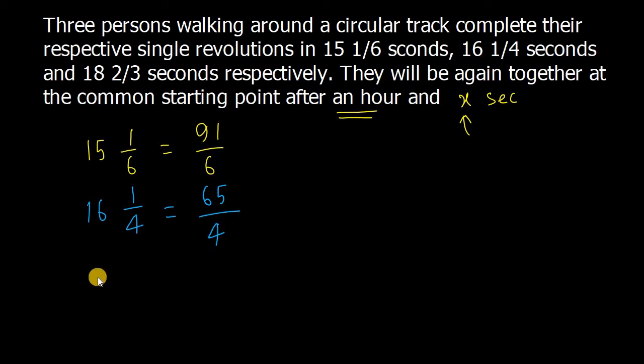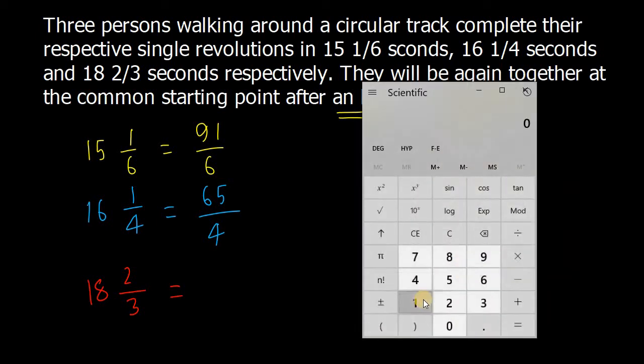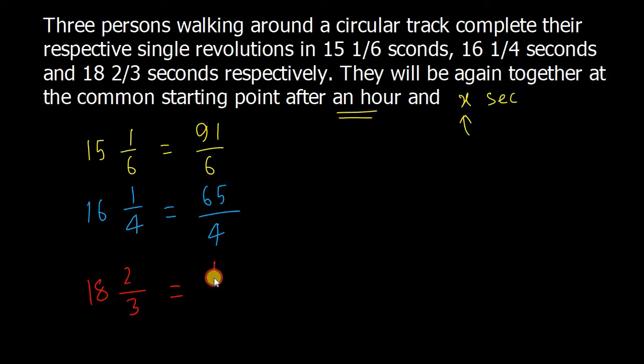The track is 18 and 2 by 3. 18 into 3 is 54, 54 plus 2 is 56, so 56 by 3 seconds for the second track from perspective one.